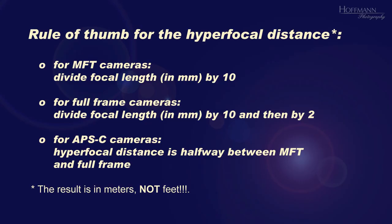No, we don't. There is a rule of thumb that works quite well for short focal lengths of 24mm or less and for large f-stop numbers, say f11 or larger, if you aren't overly pedantic. For MFT cameras, simply divide the focal length by 10 — for example, 16 divided by 10 equals 1.6 meters. For full-frame cameras, divide the focal length by 10 and then by 2 — so 16 ÷ 10 = 1.6, and 1.6 ÷ 2 = 0.8 meters. For APS-C cameras, the hyperfocal distance is halfway between MFT and full-frame — that's 1.2 meters in our example.